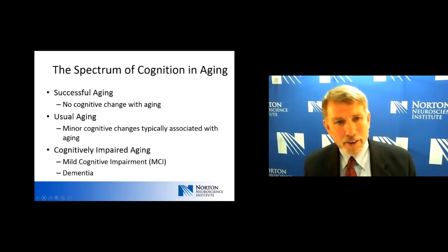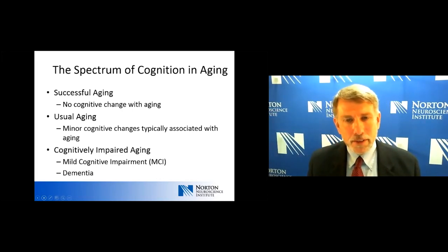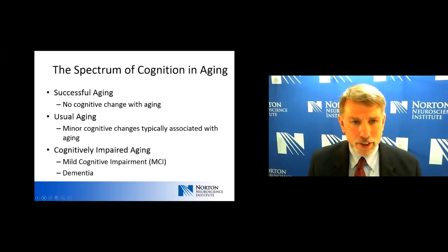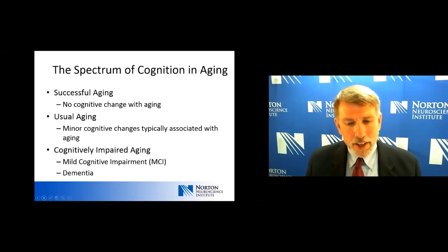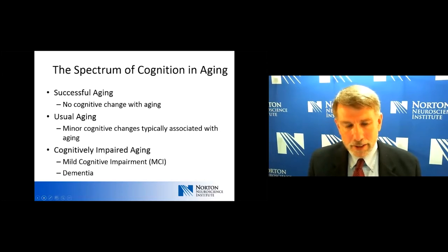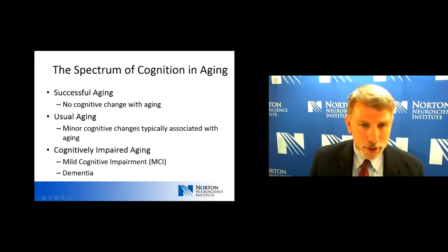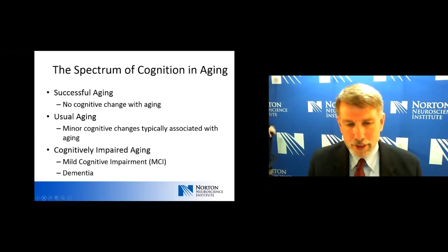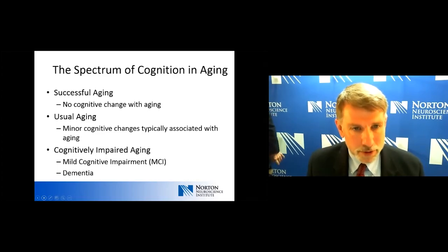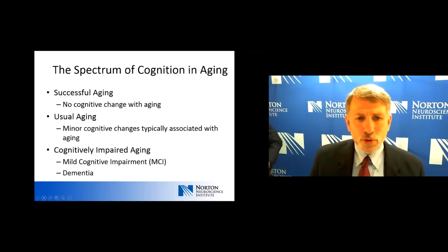As background, we often think of cognition on a spectrum, and there's a wide range of normal — and this becomes even wider with age. We often think of one end as successful aging, in other words absolutely no change cognitively with age. At the age of 80, my cognition is the same as it was when I was 30. And then there's usual aging.